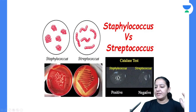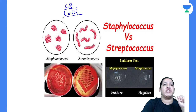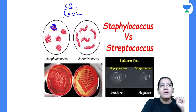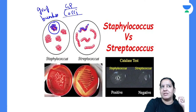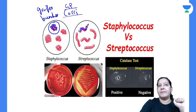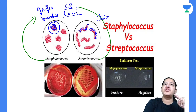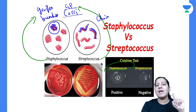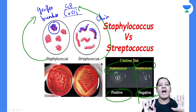Looking at the two diagrams, both are gram positive cocci — violet/blue in color and spherical in shape. The key difference is their arrangement. Staphylococcus are present in bunches like grapes, while Streptococcus are present in chains. So: Staphylococcus positive for catalase, Streptococcus negative for catalase; Staphylococcus in bunches, Streptococcus in chains.